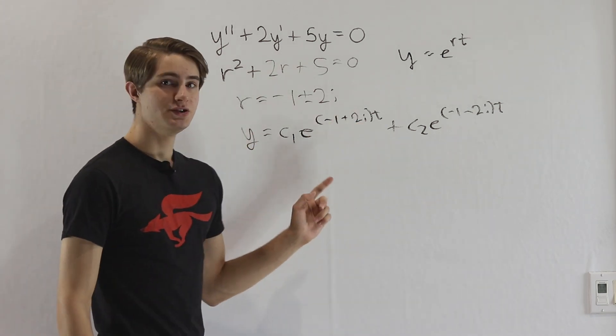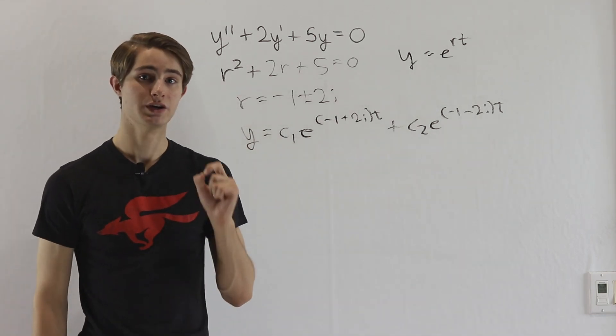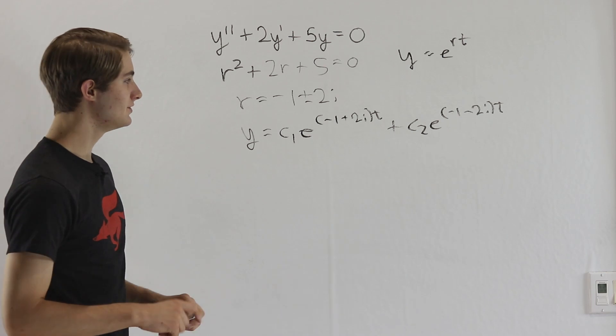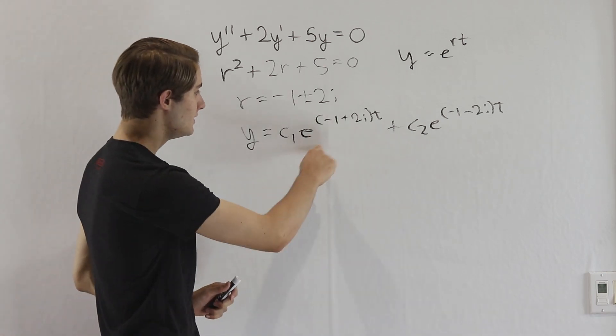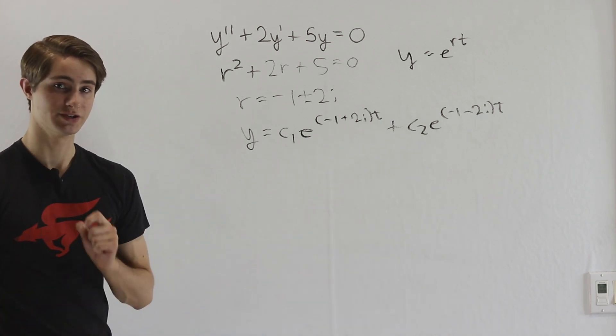So what we want to do is try to take this equation here and transform it into something that uses only real numbers. In order to do that, we're going to look at this e to the 2i t and e to the negative 2i t in terms of Euler's identity.